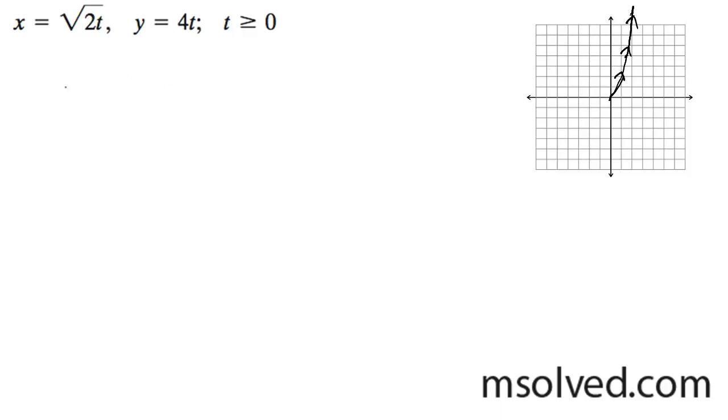Okay, so y equals 4t, we can substitute that in. The square root of 2 times... actually, I take that back. t equals y divided by 4. So we get x equals the square root of y divided by 2.